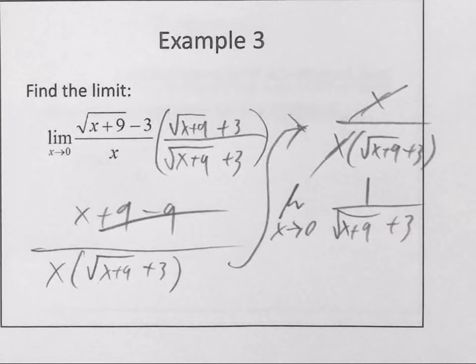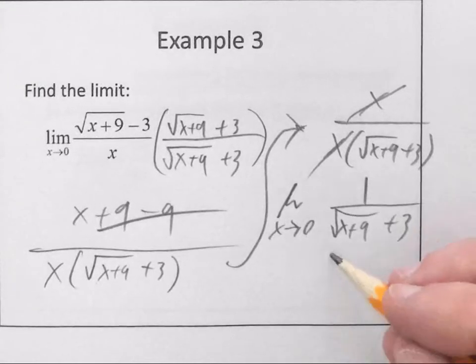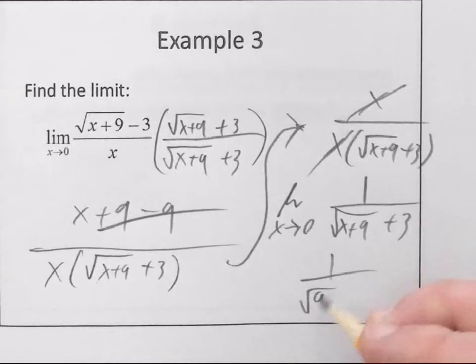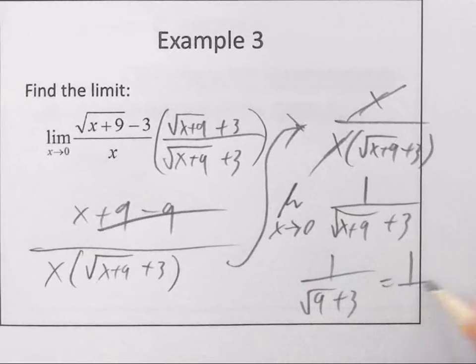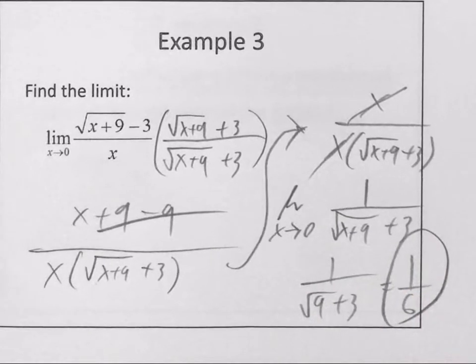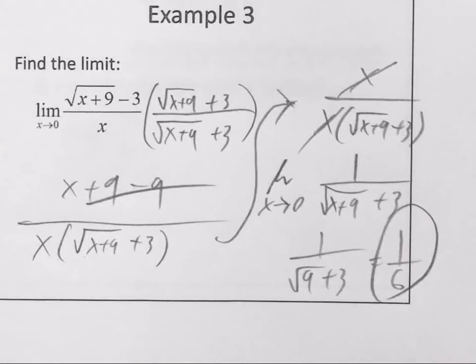So, I end up with x over x times the square root of x plus 9 plus 3. And then the x's go away. So, you're left with the limit of x approaches 0 of 1 over the square root of x plus 9 plus 3. Everybody follow that? And then it's managing plugging 0. Plug in 0 when you get it. Yeah, 1 over the square root of 9 plus 3 is just 1/6.